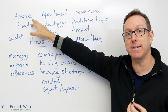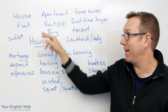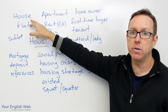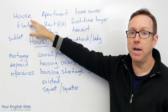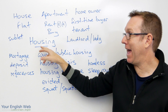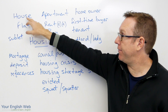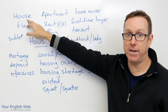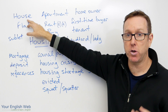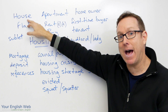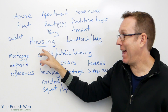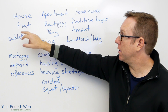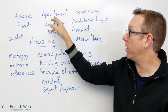The first thing I'm going to point out is the difference in pronunciation between 'housing' and 'house.' If 'house' is used as a verb — 'to house' — it changes. So: house, housing. A house, or a flat, or an apartment — places where we live.